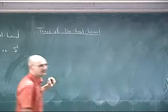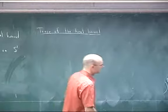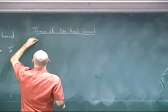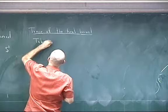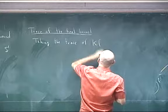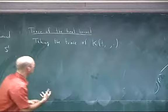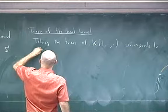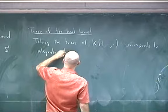One problem, as we'll see in a moment, is that it's not trace class. So you have to think about how to take the trace. But assuming we don't know this for the moment, to take the trace it corresponds to integrating along the diagonal. So taking the trace of T, where we fix the time, corresponds to integrating along the diagonal.